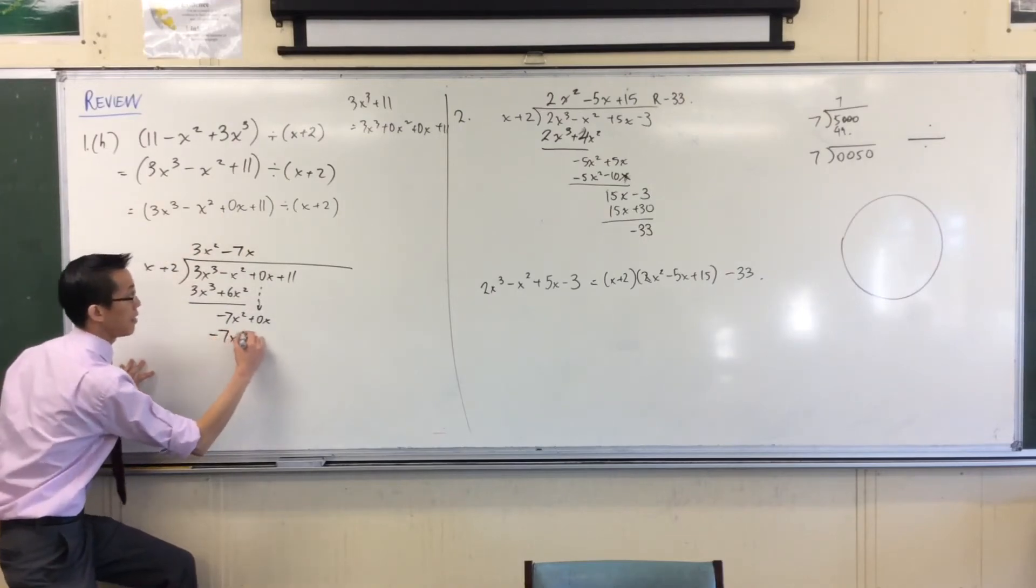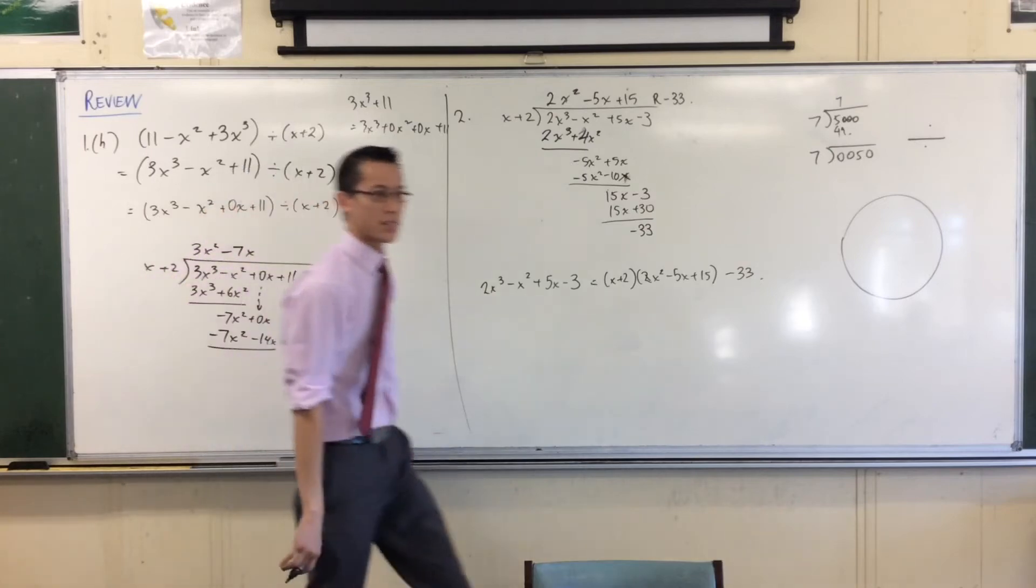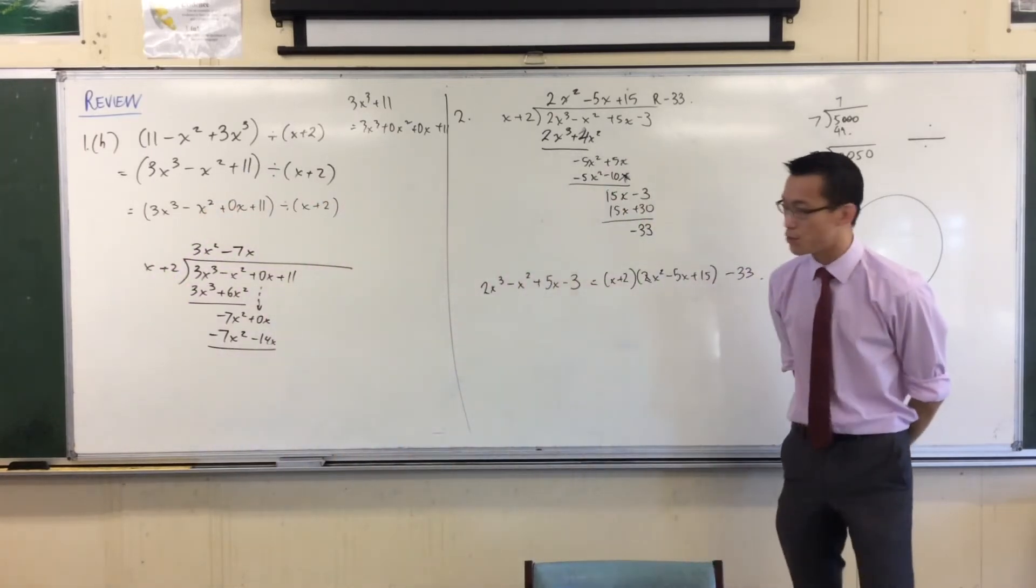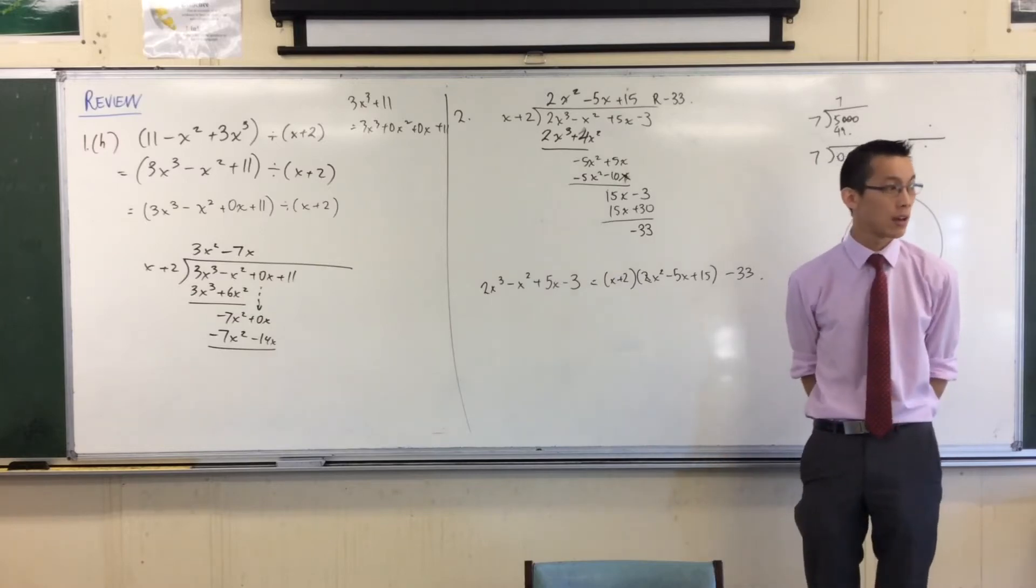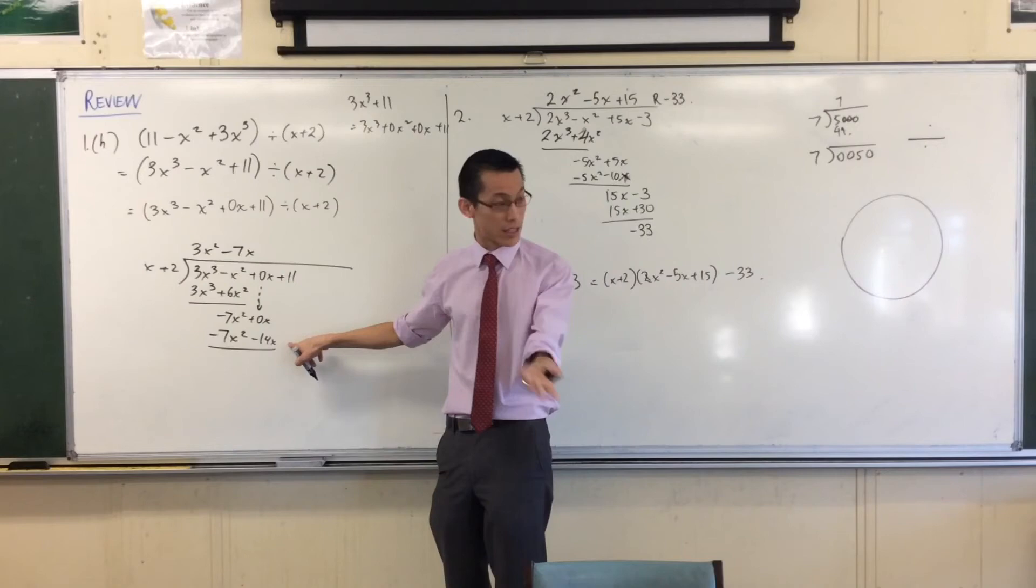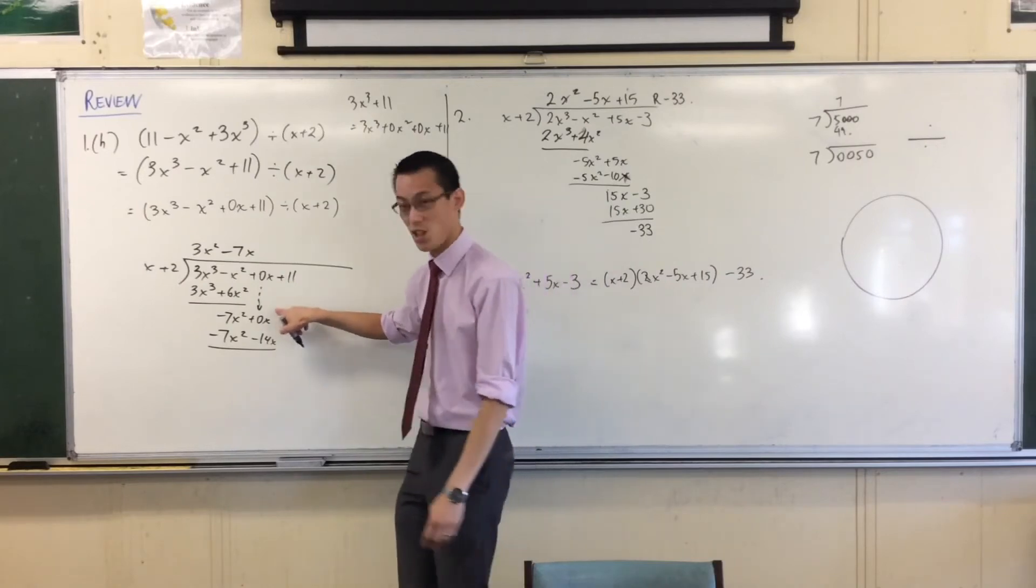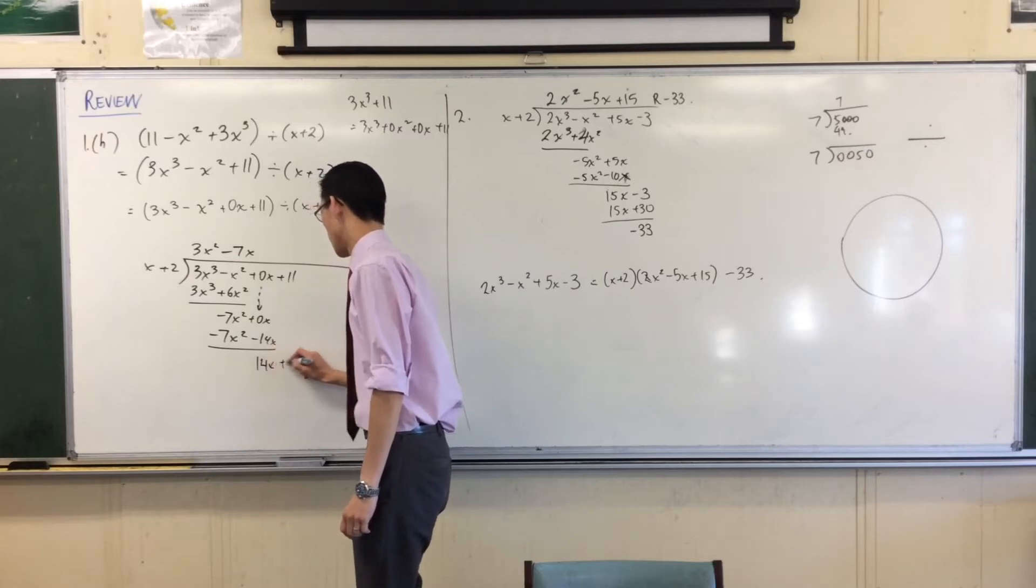Multiply back down. And that gives me this. Okay, now here's where the 0 comes into play. I do 0, and then I take away minus 14x from 0. So what happens to that negative? It's a double negative, so it becomes positive. So this is 0 plus 14x. So there you go.